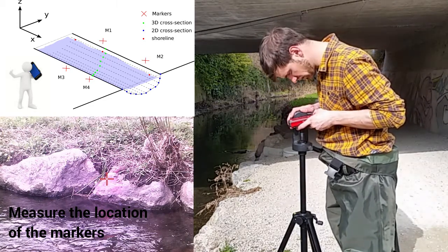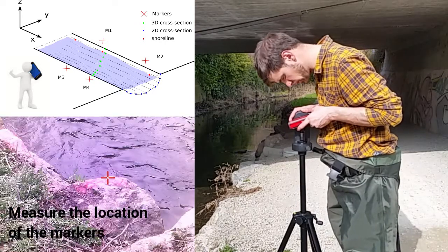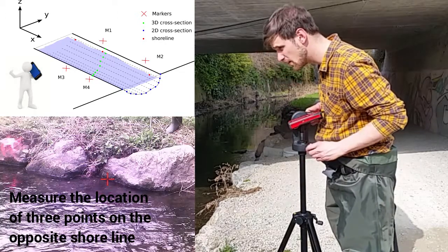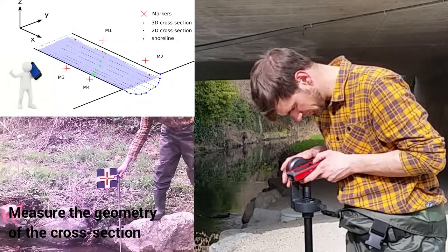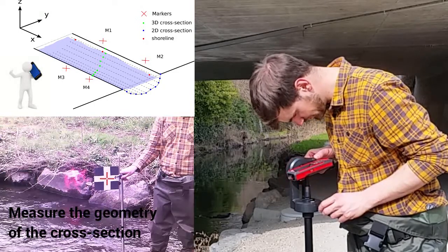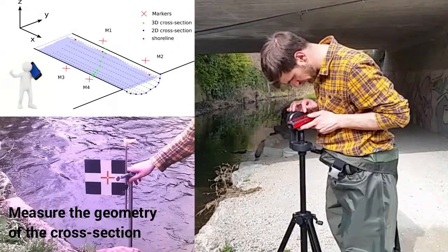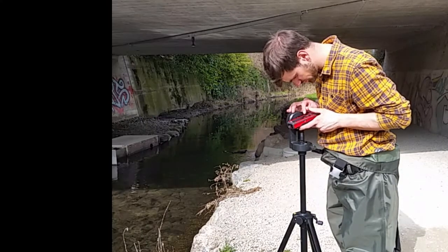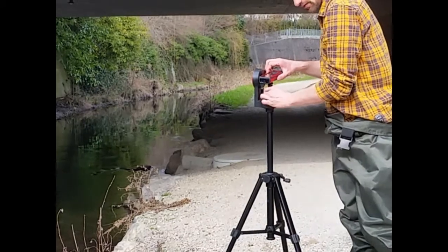Alternatively, you could also take two points along the shoreline. Then, you need to measure the location of the four markers, three points along the shoreline of the far shore, and some points along the cross-section of the river, in order to obtain a 3D free cross-section. To sample the cross-section, we use a measuring stick with the target. Make sure that you sample the cross-section at a resolution high enough to capture all important irregularities across the riverbed.